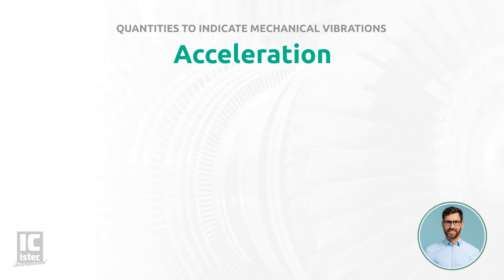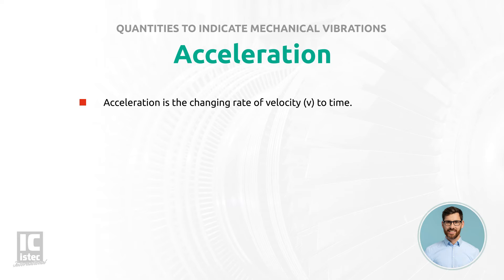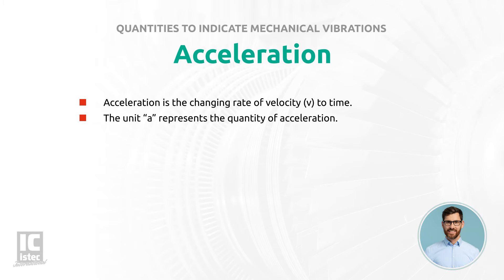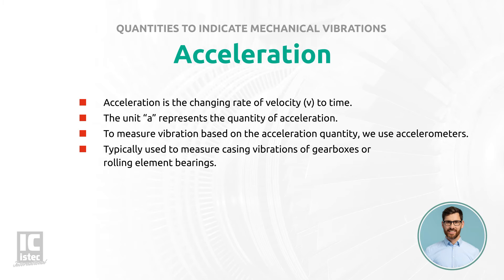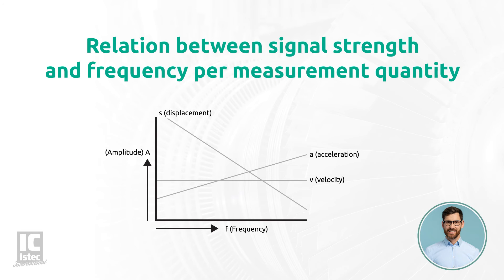If we take a look at this plot, we can conclude that the velocity is the changing rate of velocity to time. The unit A represents the quantity of acceleration. To measure vibration based on the acceleration quantity, we use accelerometers. These sensors are typically used to measure casing vibrations of gearboxes or rolling element bearings. If we take a look at this plot, we can conclude that the relation between the signal strength and frequency determines which sensor is best to be used for a specific application.